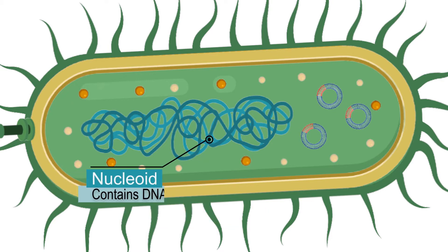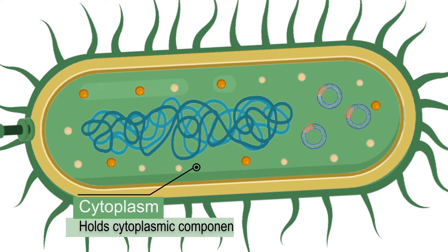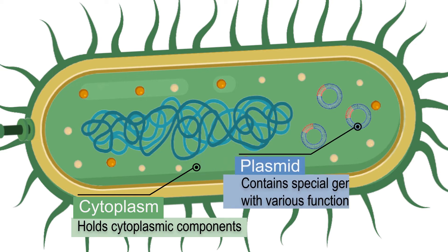Another part of a bacterial cell is called the nucleoid. It is usually located along the center of the cell, where the genetic material is concentrated. Next is the cytoplasm, a semi-liquid portion of the cell that houses other cytoplasmic components, including plasmids.